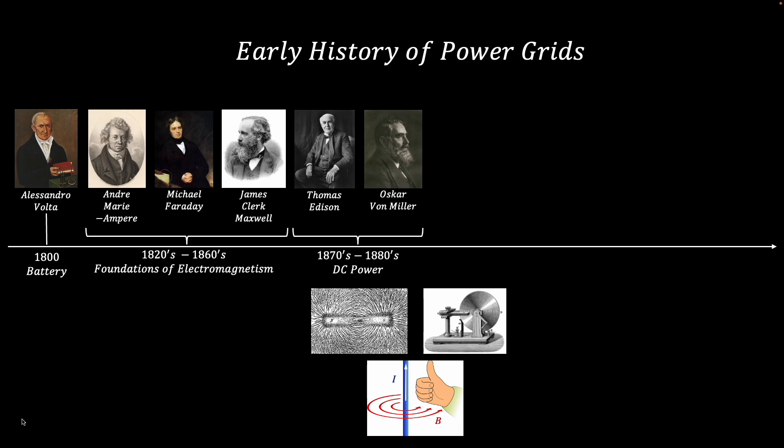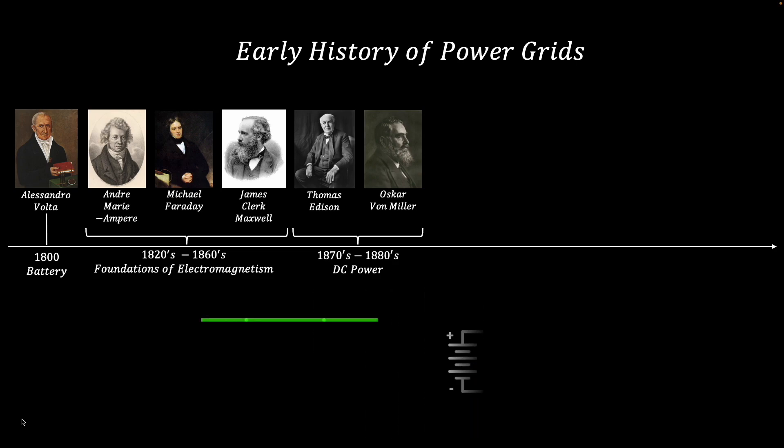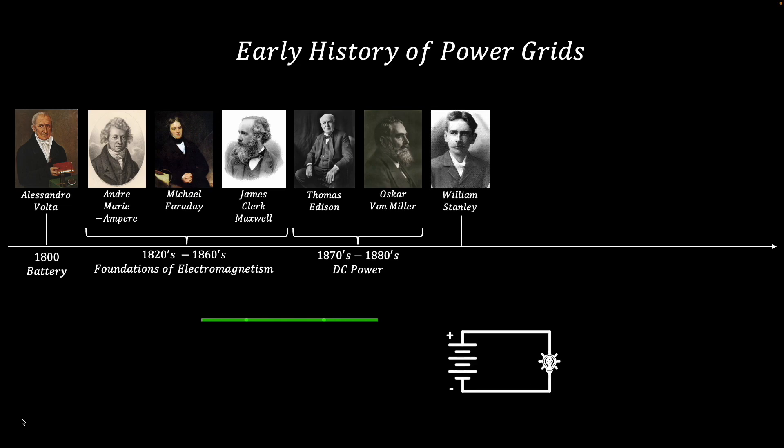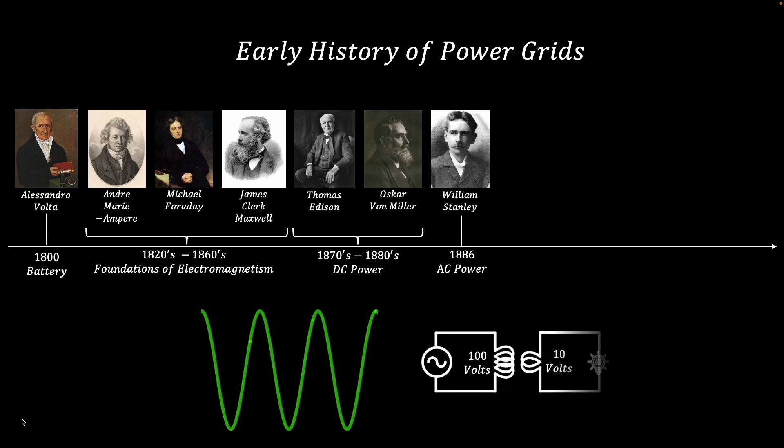The earliest power grids in the 1870s and 1880s used direct current, or DC, which provides a constant signal to power the electrical load. Then in 1886, William Stanley demonstrated the first large power grid using alternating current, or AC. AC provides a sinusoidal signal that can be transformed into higher or lower voltages, which enables longer-range power transmission.